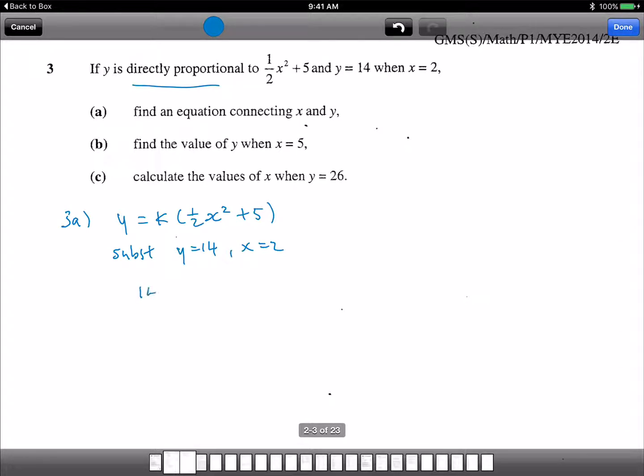So 14 equals to k times 1/2 x squared plus 5. Now 2 squared is 4. So 1/2 times 4 is 2. So 2 plus 5 equals to 7. Therefore, k equals to 2. You get k times x squared plus 5. That's part A.